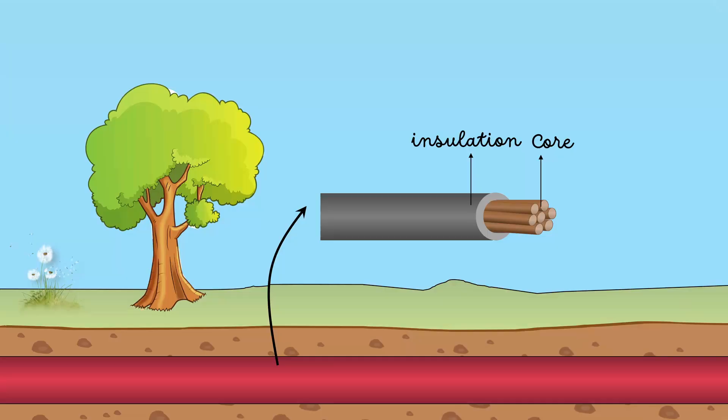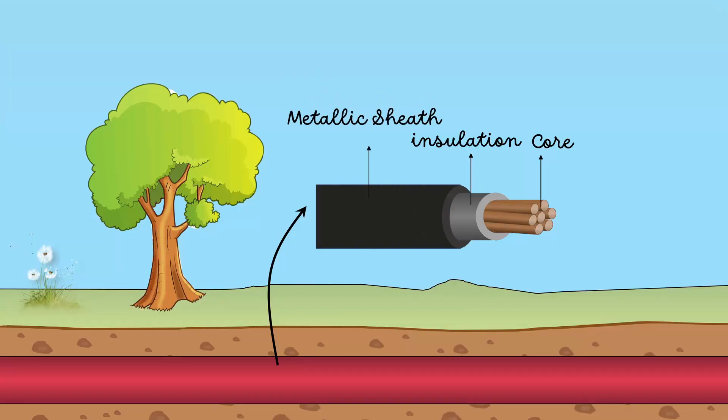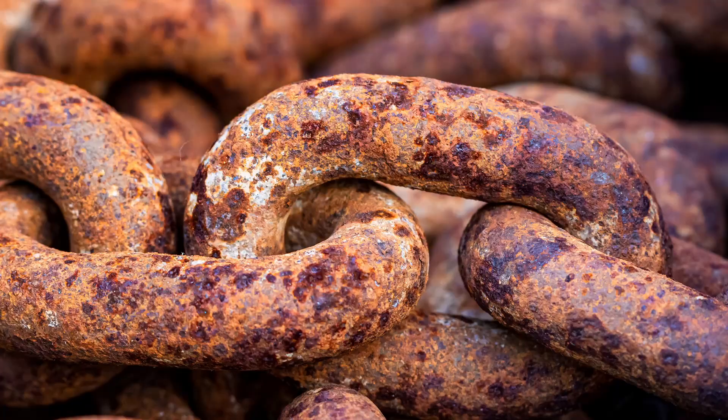Most of the insulation materials are hygroscopic, which means they absorb moisture. To avoid this, a metallic sheath of lead or aluminium is provided over the insulation. One of the problems with metals is corrosion, and our metallic sheath is not an exception.